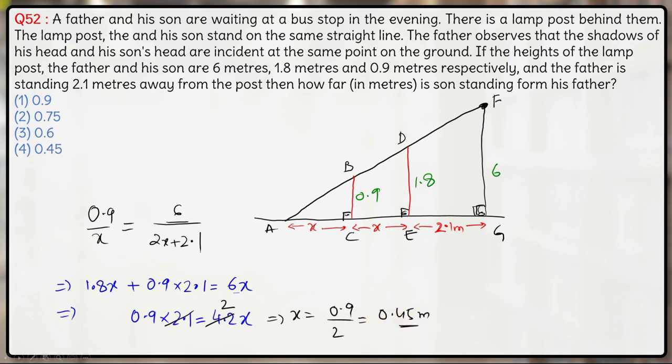So the question was asking, how far is son standing from his father? So we have to basically calculate the value of x which is 0.45, hence the answer to this question is option 4, 0.45 meters.